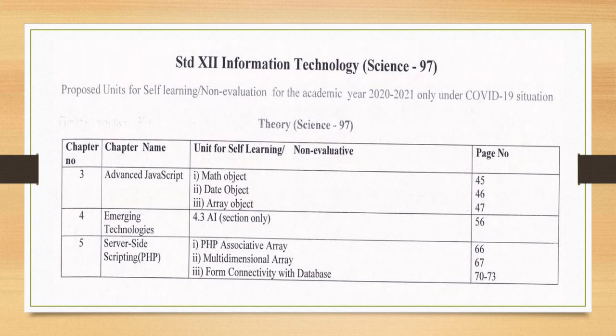In the case of 12th standard, the deducted portion is in Chapter 3 — Advanced JavaScript: Math object, Date object, and Array object — on page numbers 45, 46, and 47. Next, in Chapter 4 — Emerging Technologies, the Artificial Intelligence part on page number 56 is being deducted. Next, in Chapter 5 — Server Side Scripting PHP: associative array, multi-dimensional array, and form connectivity with database are deducted.